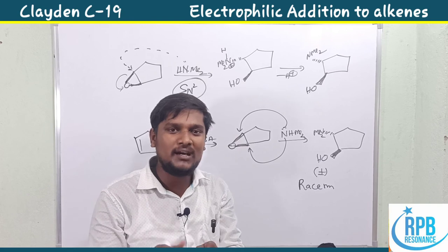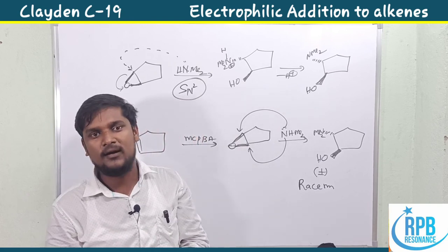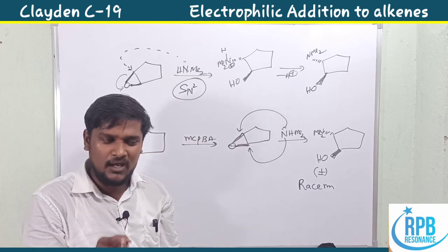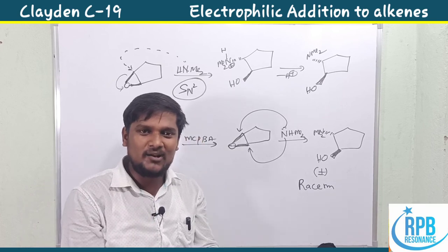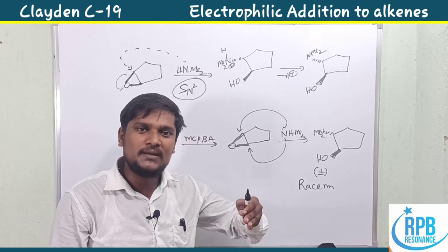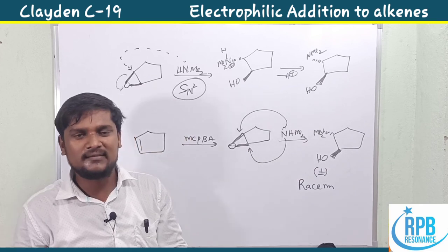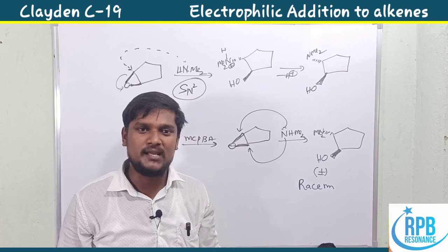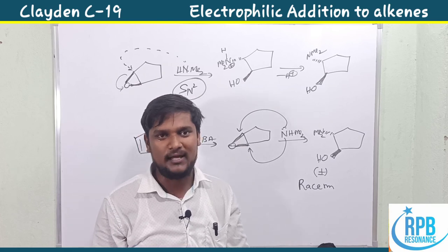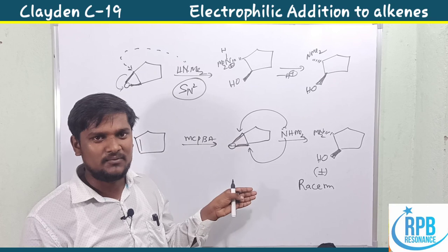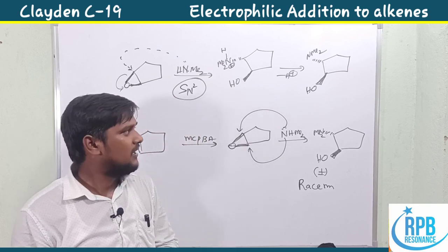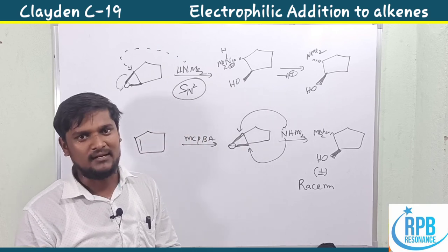This concludes the opening of epoxides and bromonium ions in Chapter 19 of the Clayden textbook. To summarize: bromonium ion opening in either acidic or basic medium gives the same product. For epoxide opening, acidic medium opens the sterically more crowded side, while basic medium opens the sterically less crowded side — with one exception where HBr opens the sterically less crowded side due to the strong nucleophilicity of bromide ion. Thank you for watching.